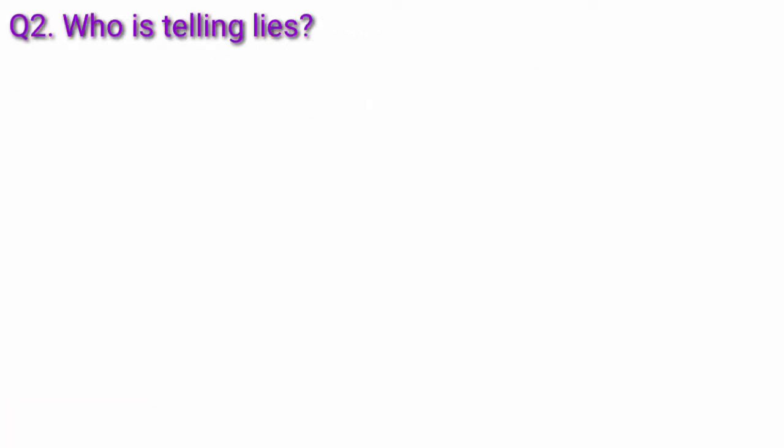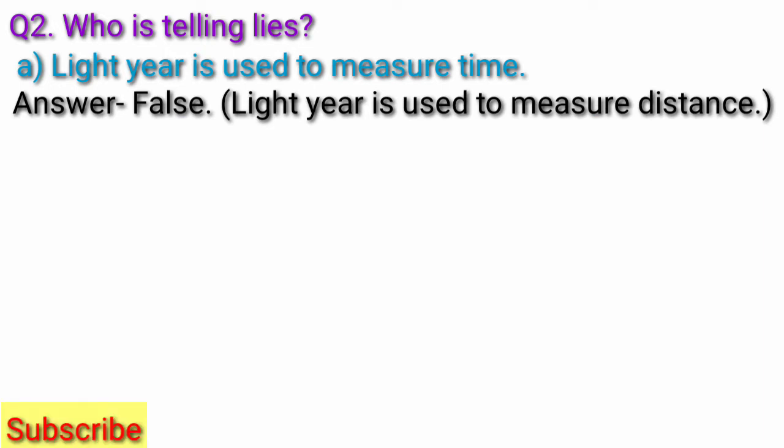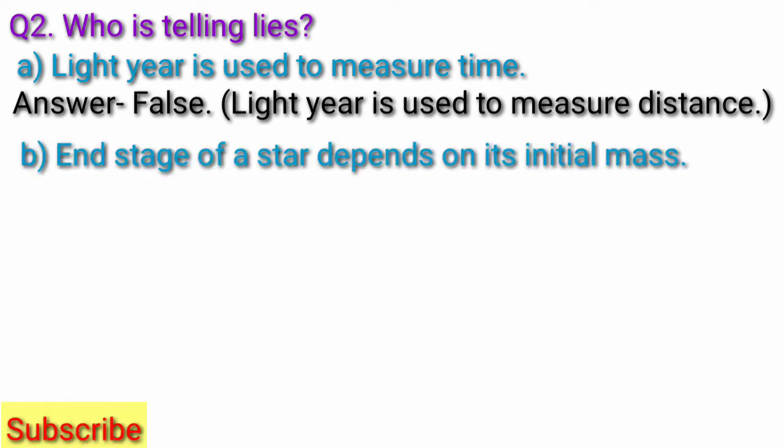Now, question 2, who is telling lies? Question A, light year is used to measure time. Answer, false. Light year is used to measure distance. Question B, end stage of a star depends on its initial mass. Answer, true.